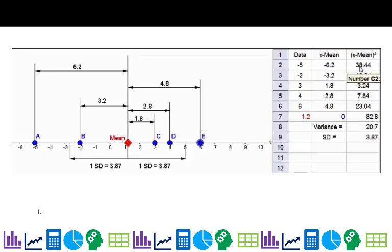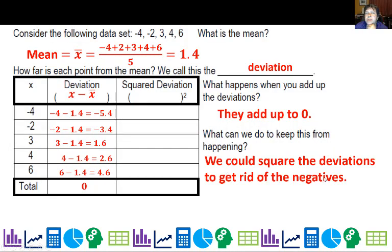So how can I make this not add up to zero? I could square them. We could square the deviations to get rid of the negatives. We're going to put (x - x̄)² here. Negative 5.4 squared would be 29.16, negative 3.4 squared is 11.56, 1.6 squared is 2.56, and so forth. Here are all our squared deviations, and when we add them up, we get 71.20.